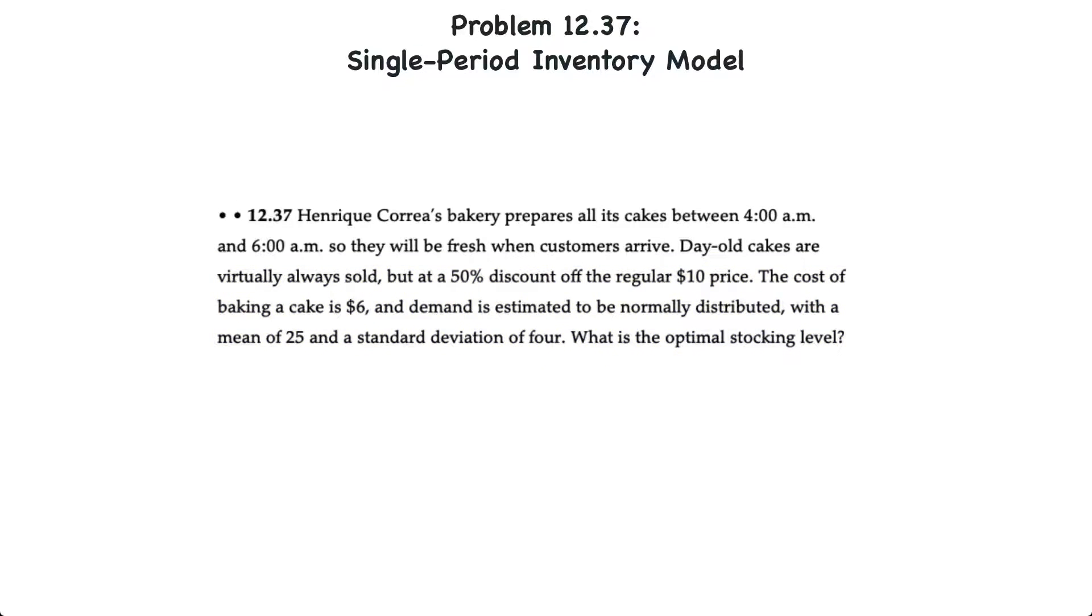If we list our variables in the problem to be used with a single period inventory model, we have the cost of a shortage which is simply the selling price minus the variable cost of making the cake, which is $10 minus $6 or $4. In accounting we also call that contribution margin. And then we also have the cost of overage which basically is the $6 cost minus the salvage value, the discounted selling price of $5. So the cost of overage is $1 per cake.